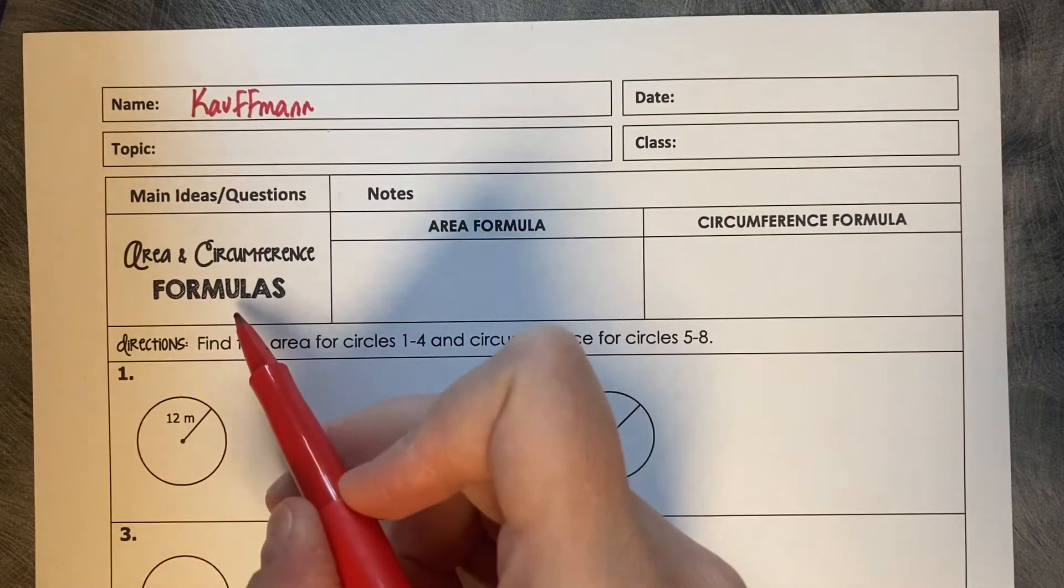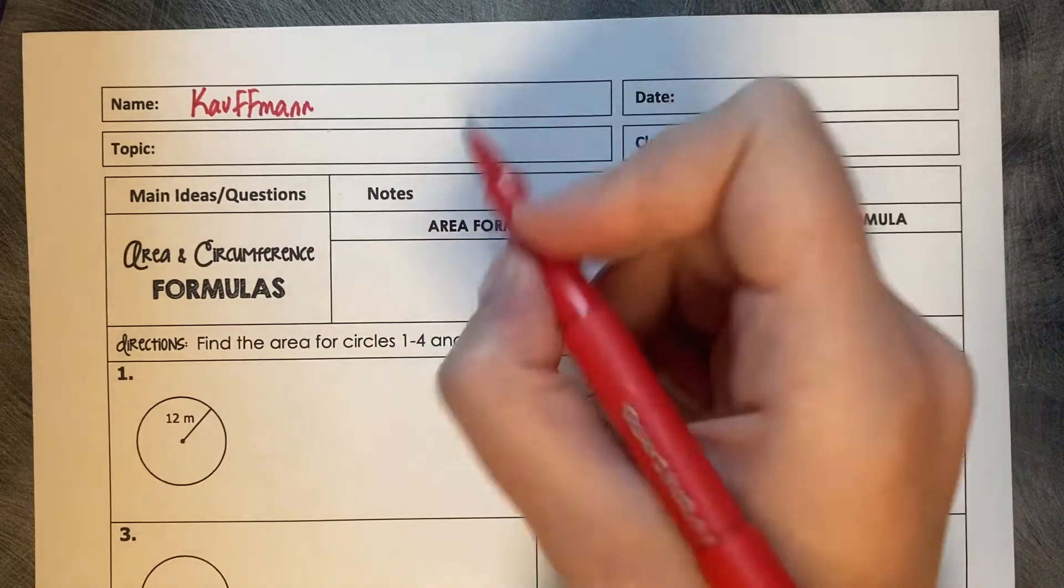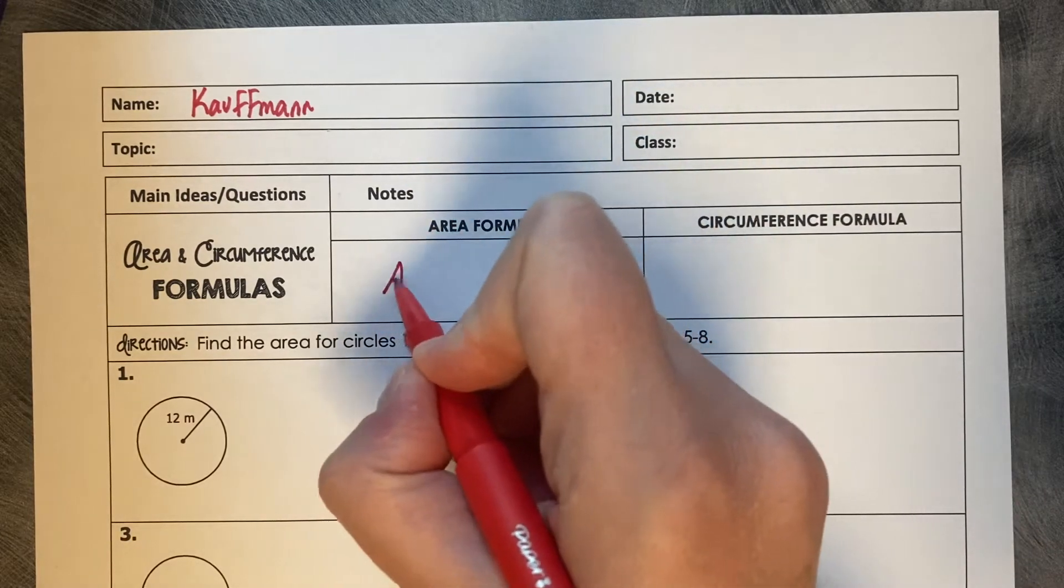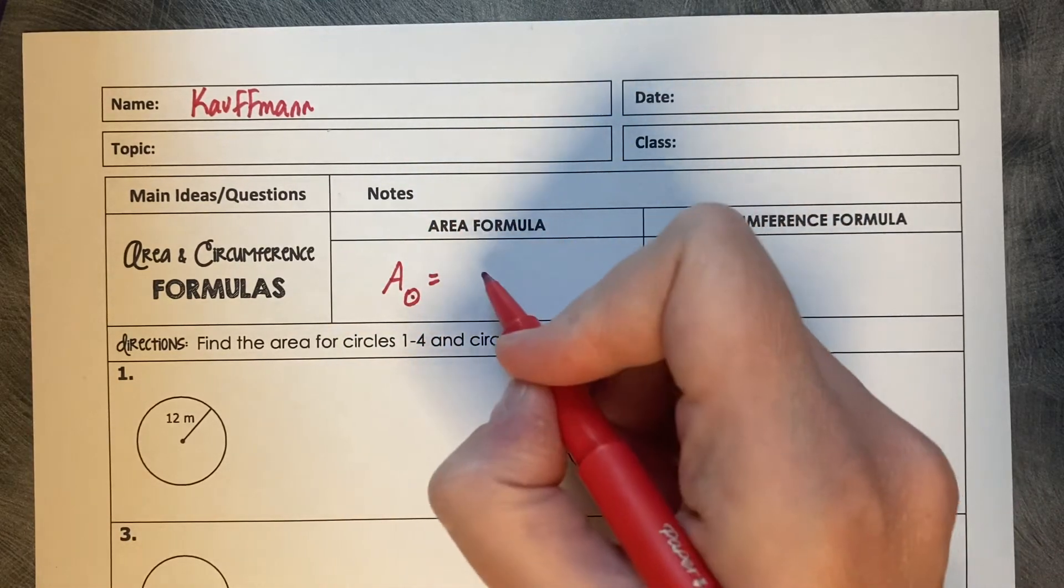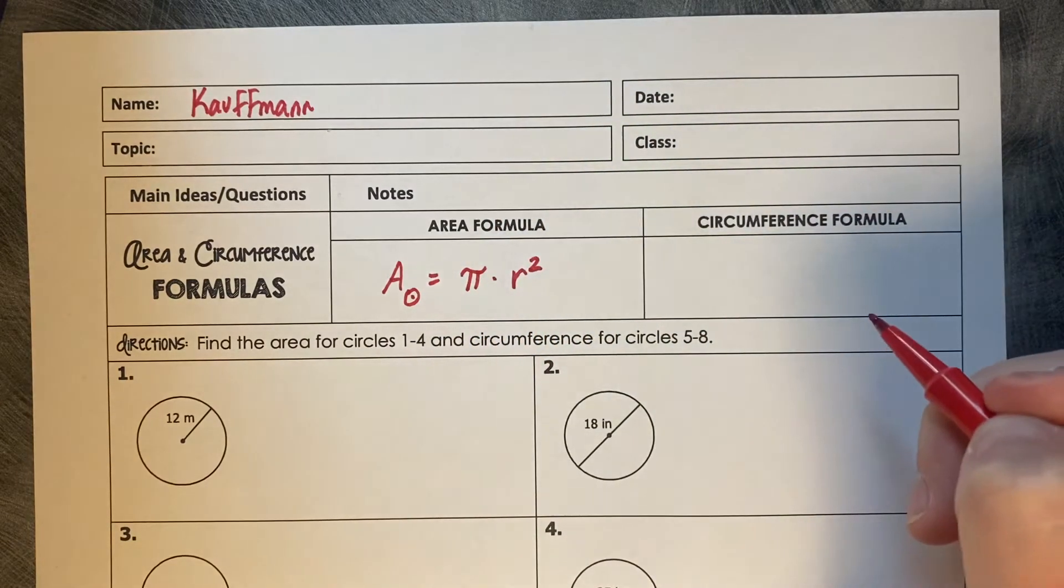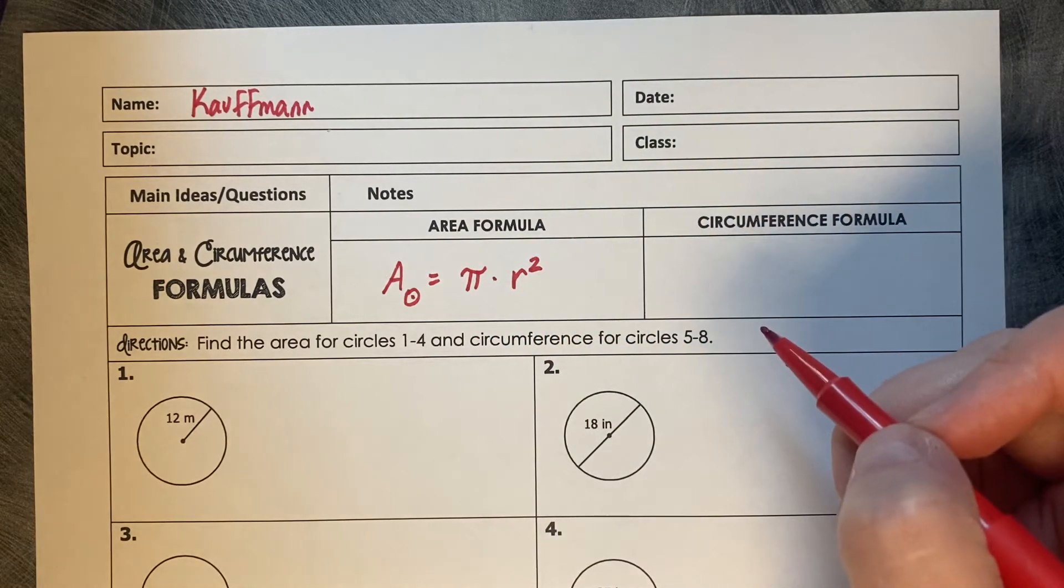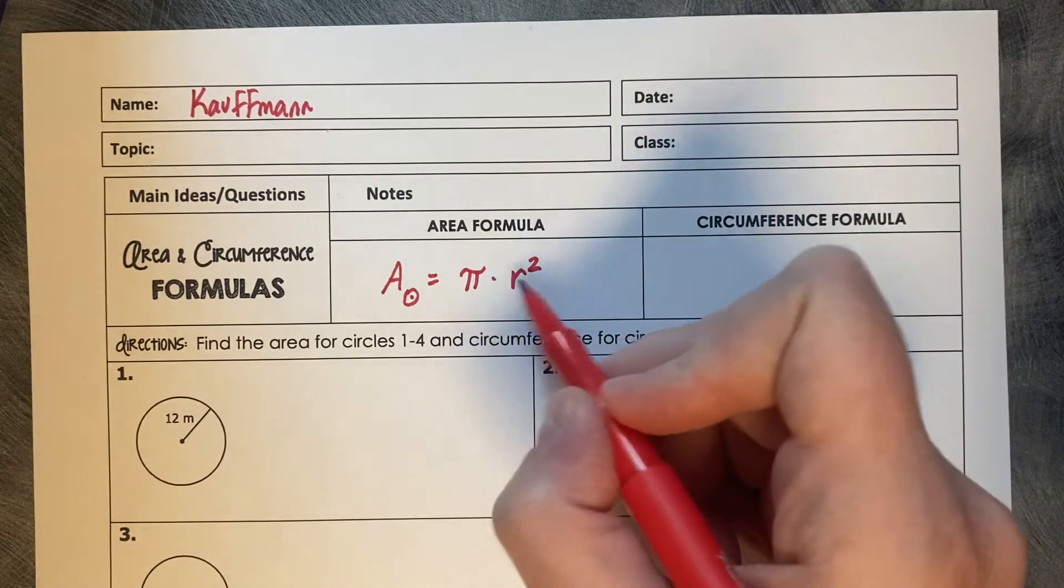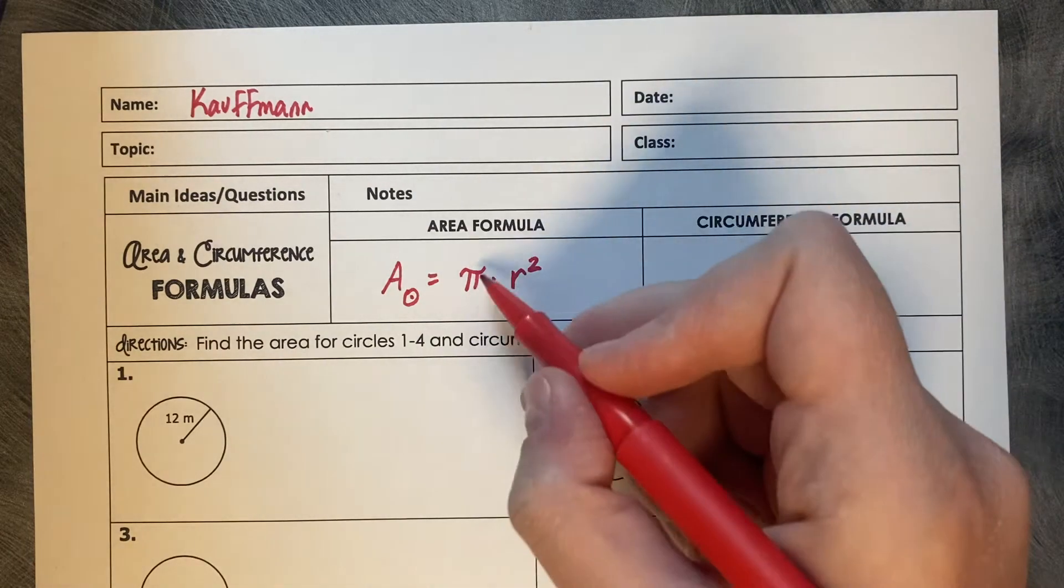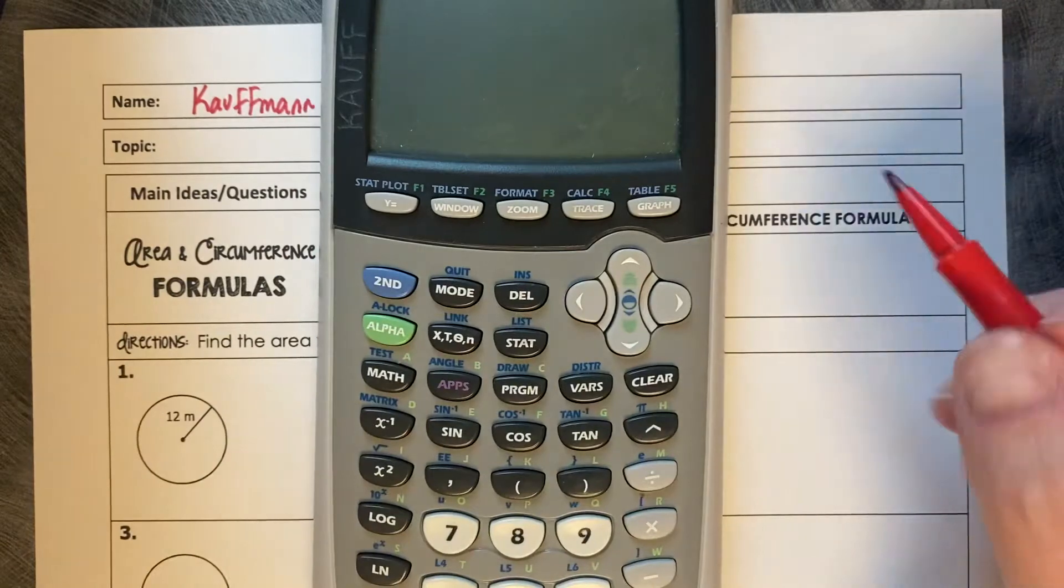Area and circumference formulas. The area of a circle—and just note that we're in circles unit—the area of a circle you do pi times the radius squared. You can write those in the other order as well, you could say radius squared times pi, or you can do the pi times the radius squared. Typically we actually end up writing the number first and the pi symbol second.